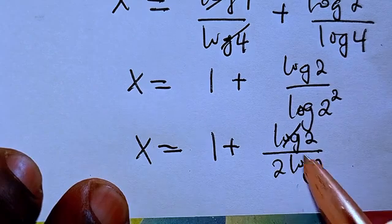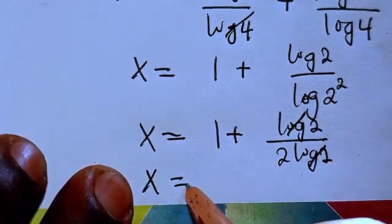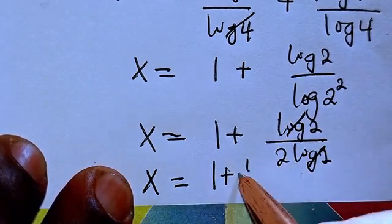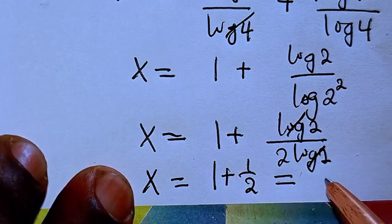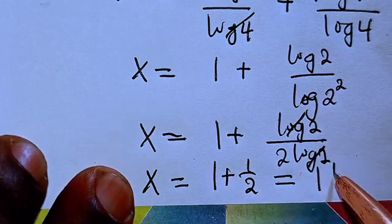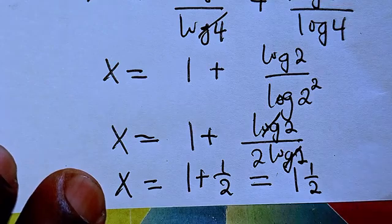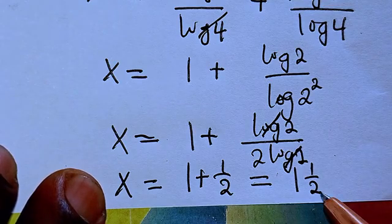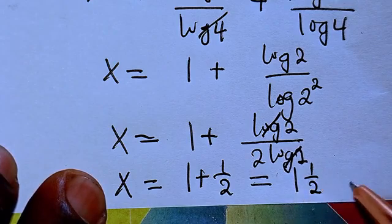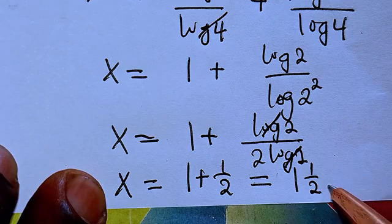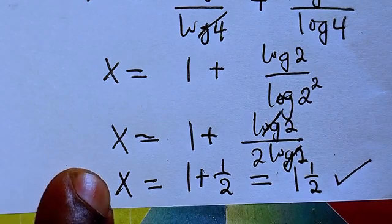So now 1 plus 1 over 2. So now 1 plus 1 over 2 will give us 1 and 1 over 2. Or you can say 2 times 1 is 2, plus 1 we have 3. So we have the value of x to be 1 and 1 over 2, which is 3/2.